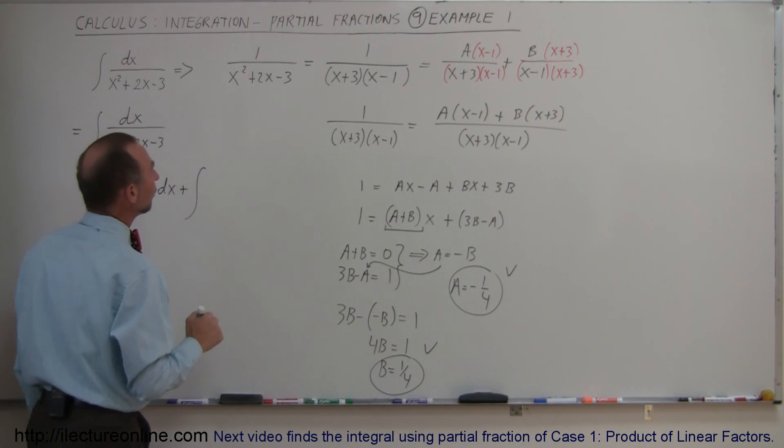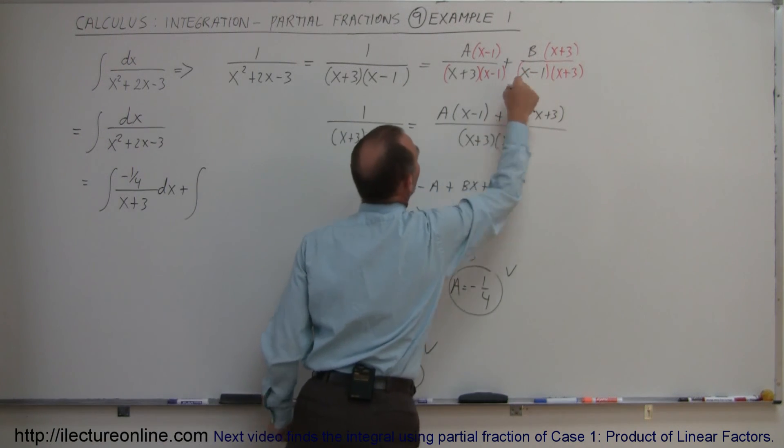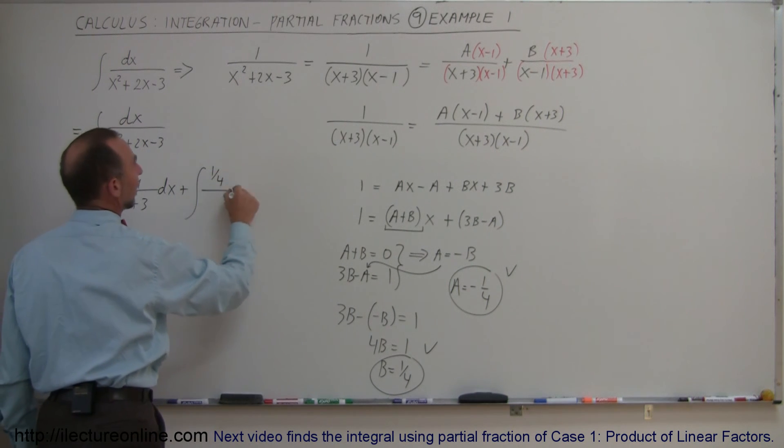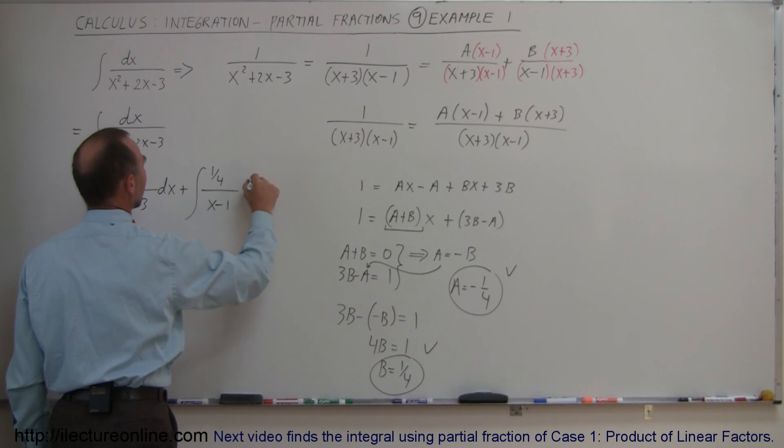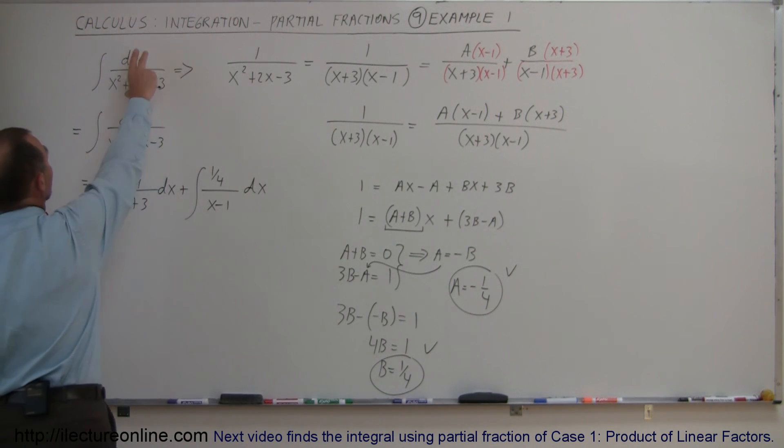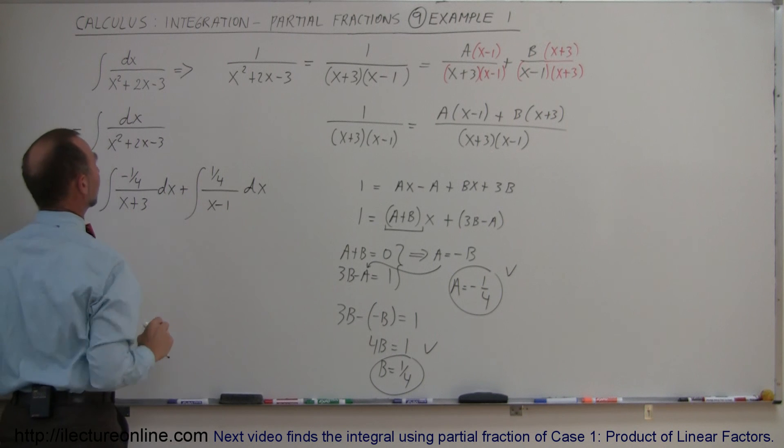Plus the integral of my second factor right there, which is B, which is a positive 1 quarter, divided by x minus 1 dx. And so what I've done now is I've turned my single integral right here into the sum of two integrals, and those are much easier to integrate.